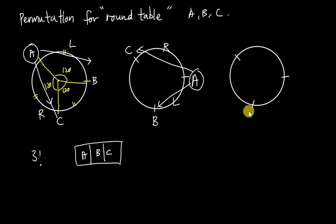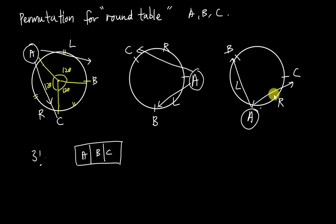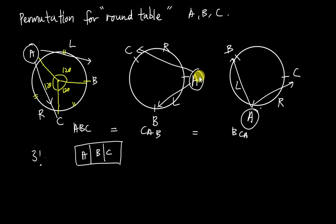If A sits at position three, looking right you see person C, looking left you see person B — exactly the same view. Normally we say A-B-C, C-A-B, and B-C-A are different arrangements, but in this case they are identical. You can only see person C and person B; there's no way to tell the difference. We just assume they are the same.